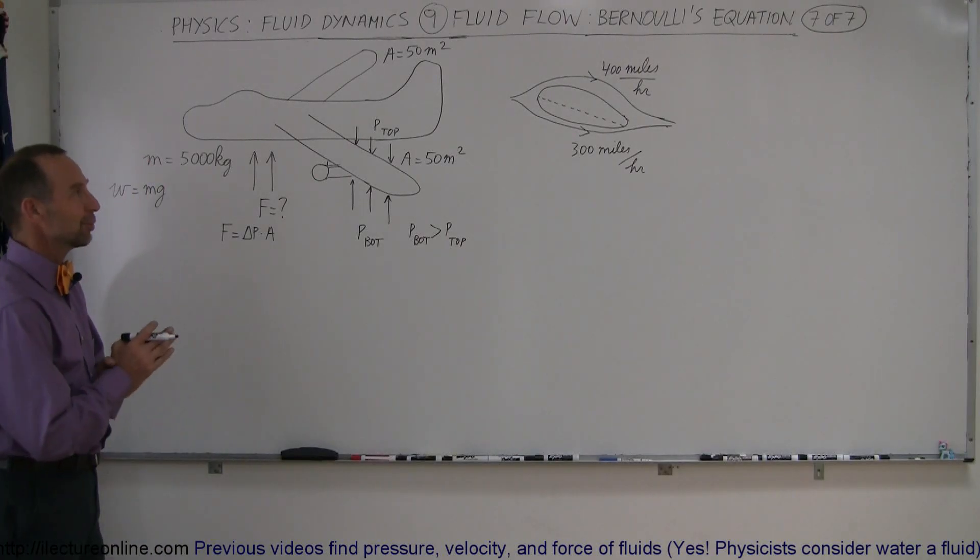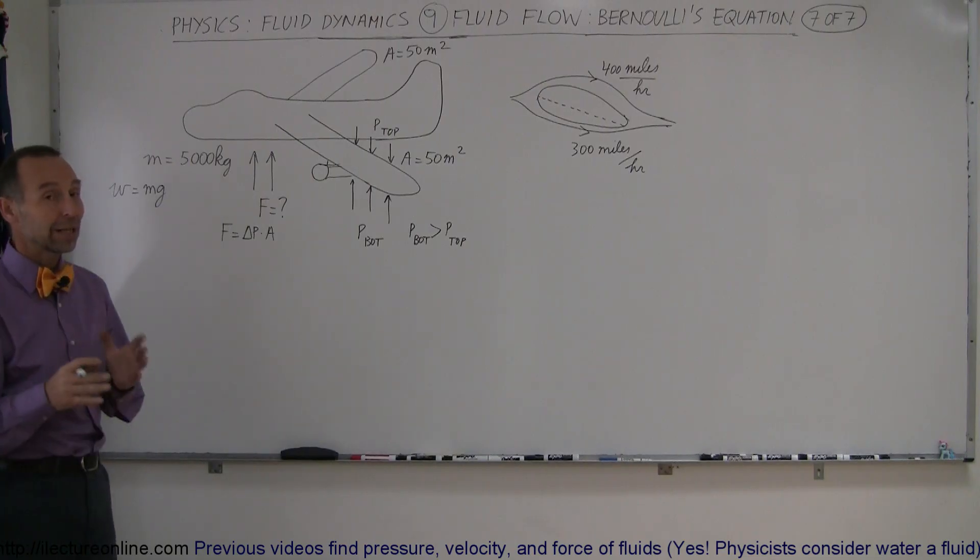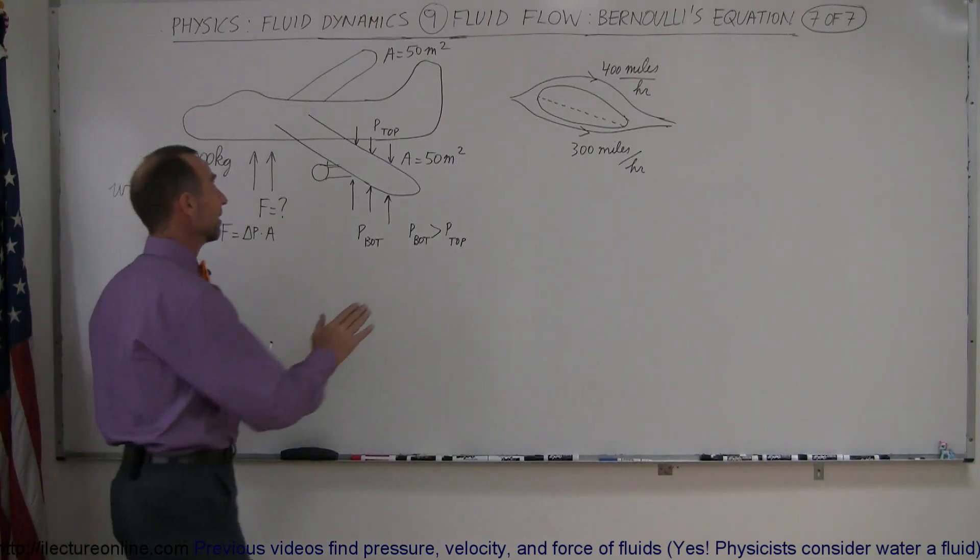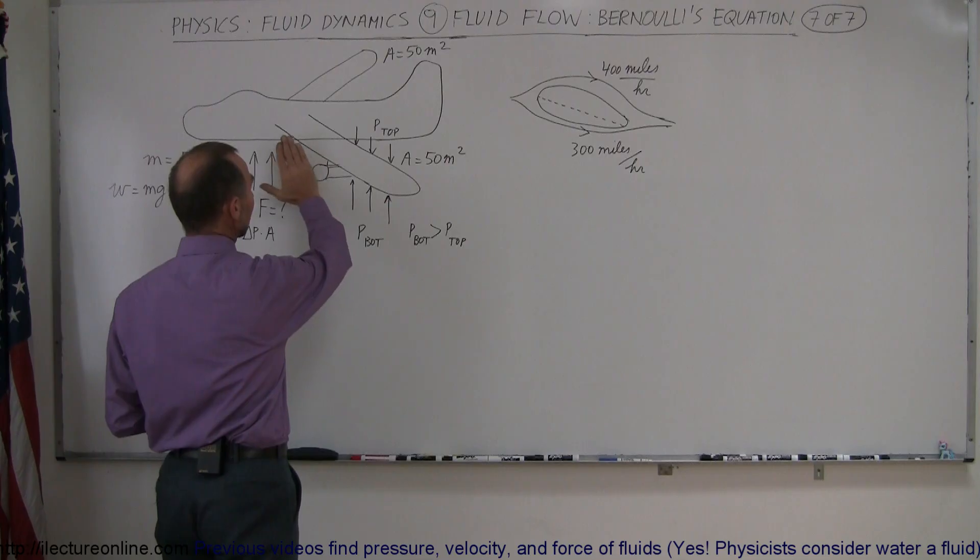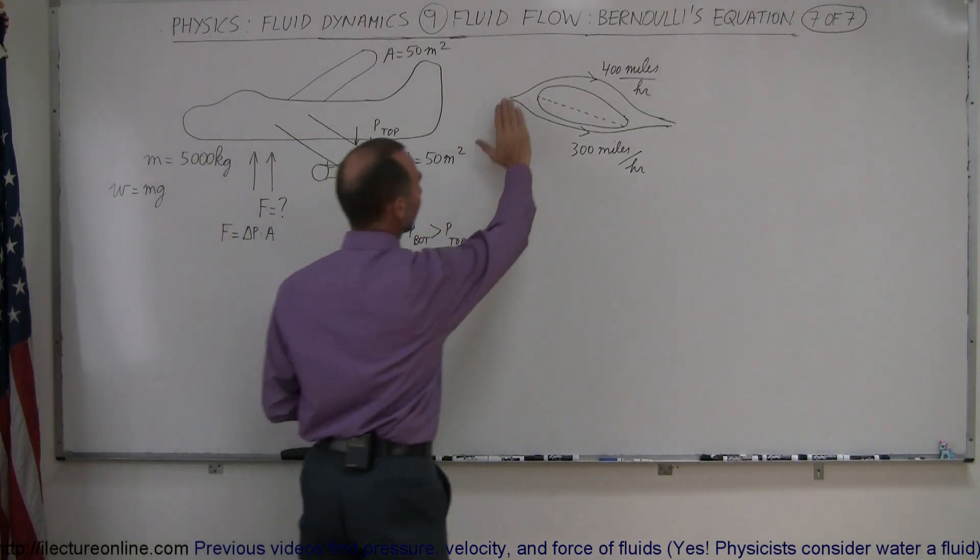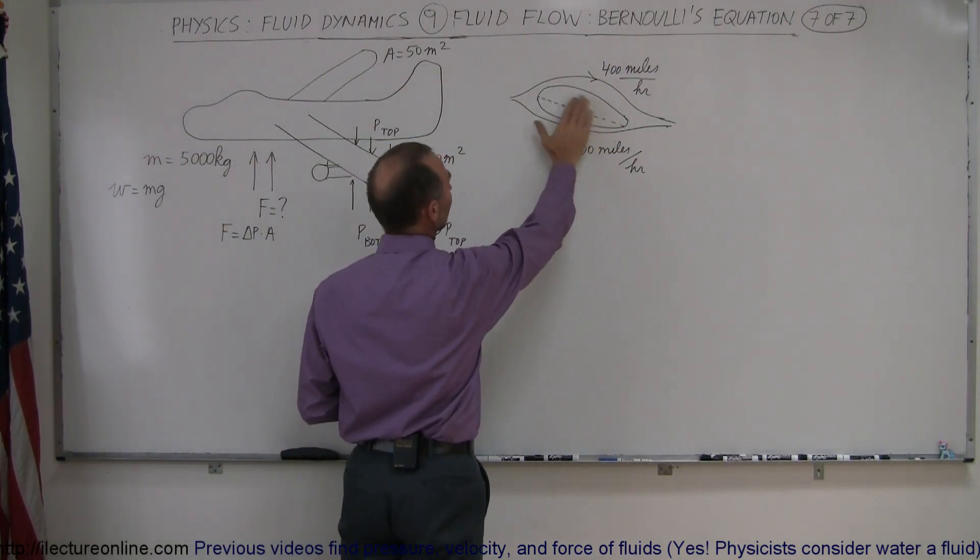Another very interesting application of Bernoulli's equation is how airplanes stay in the air. And the way that really works is this. Let's say we take a wing of an airplane and we cut it open so we can see the cross-sectional area. So this is the wing, cross-sectional area of the wing.